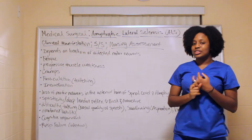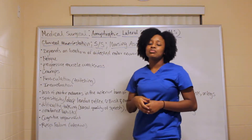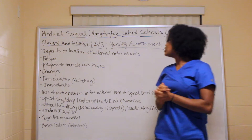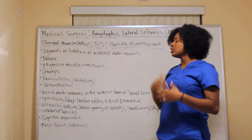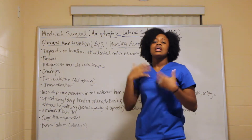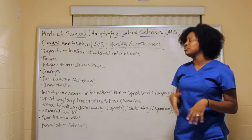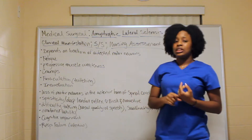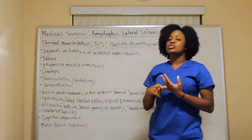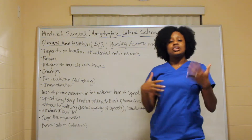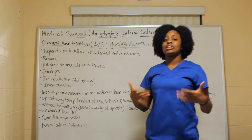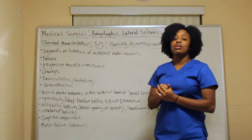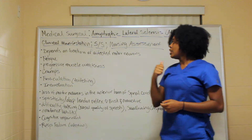Now for the clinical manifestations, also known as signs and symptoms or nursing assessment. It depends on the location of the affected motor neuron, but overall patients are going to be fatigued with progressive muscle weakness — as the years go on it only gets worse. They may complain about cramps, twitching, and incoordination.